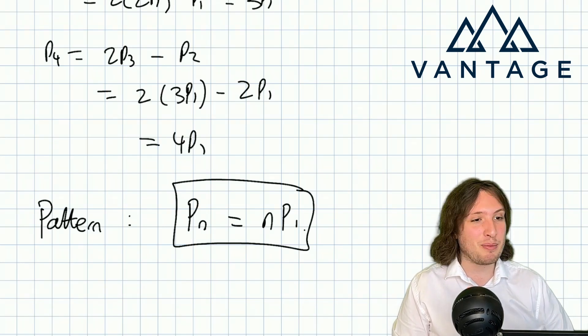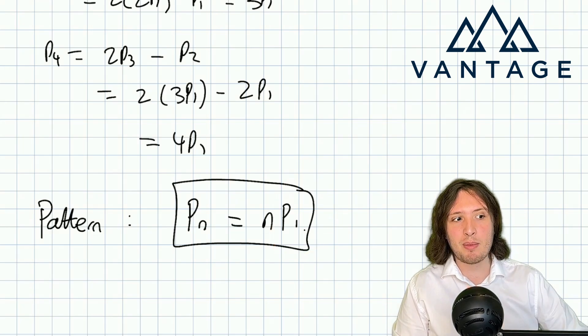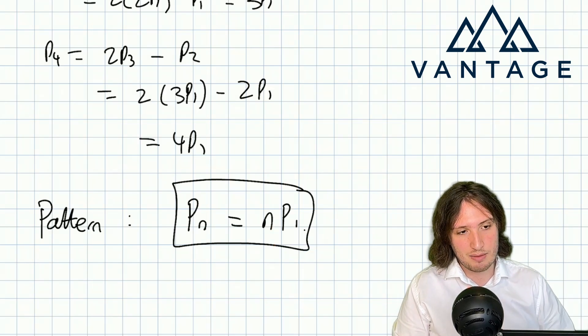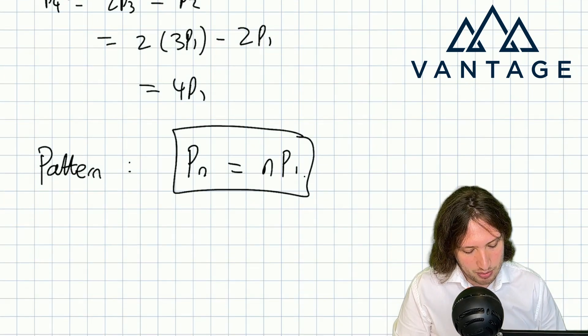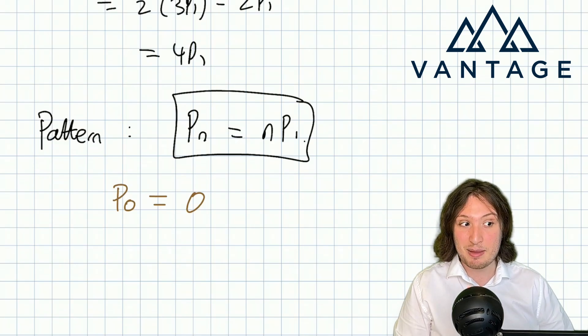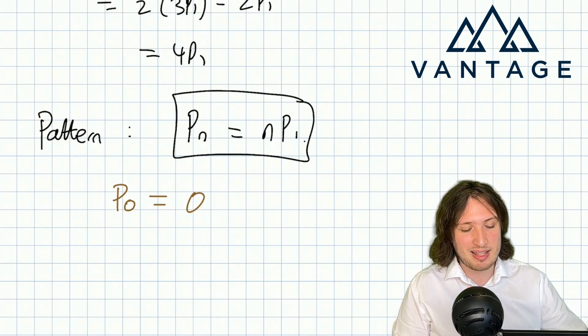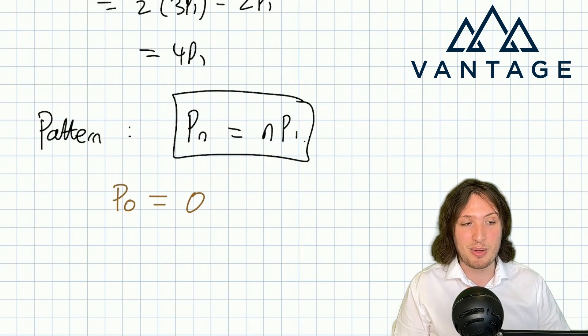We're not done because even if we just assert the pattern, we don't know what P_1 is. Now usually when we want to pin down unknowns from solving a term-to-term rule, we think about boundary values, special values that we know. We know that P_0 is 0 clearly because then Alice is already lost, but that doesn't tell me anything because if I plug n equals 0 in this equation it's automatically true. It doesn't tell me about P_1.